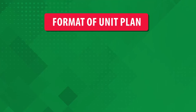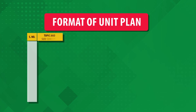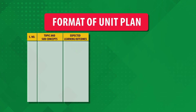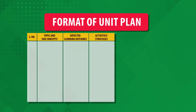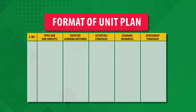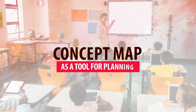Let us see one format. For one unit, you write the topics and sub-topics to be covered in one lesson in one column. For each topic or sub-topic, you plan certain objectives or expected learning outcomes. To achieve those learning outcomes, you plan what type of activities you will organize and what strategy you will adopt. In that methodology and strategy, you identify the learning resources you will use, and you also plan how you will assess that particular lesson to assure yourself that whatever you planned has been achieved.